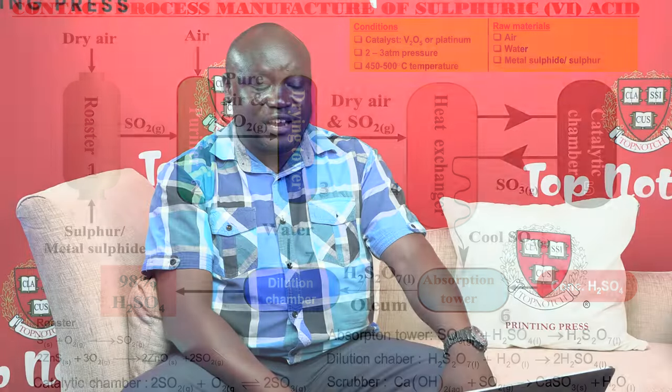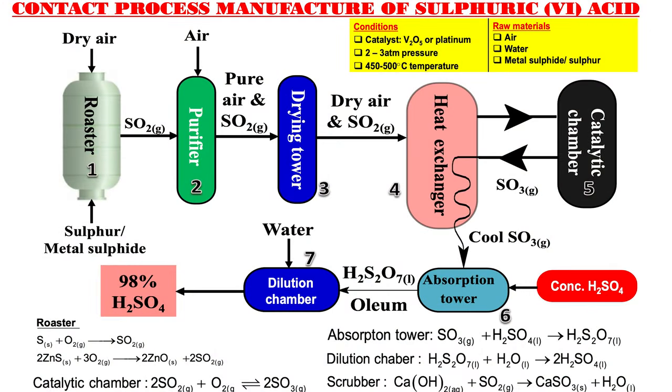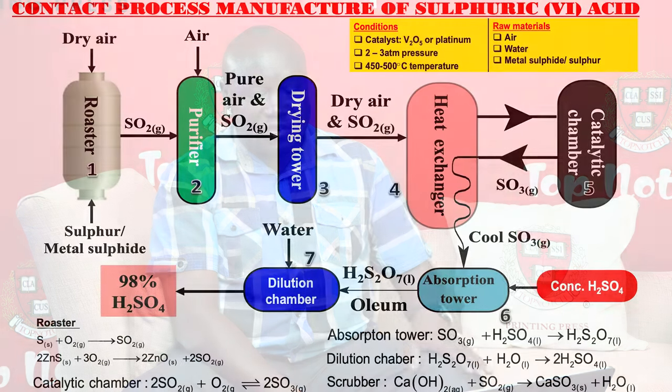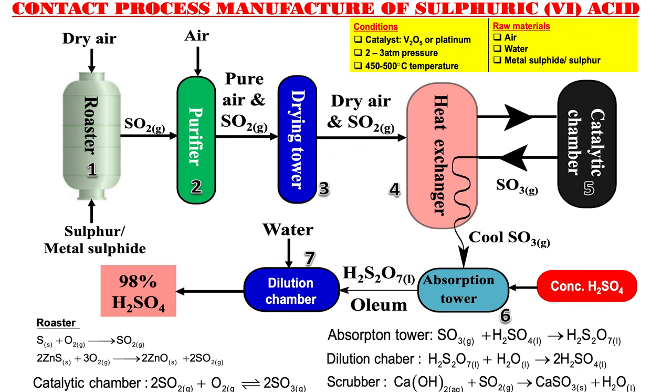We go to the absorption tower where SO3 is absorbed in concentrated sulfuric acid to form oleum. There is a reason why we don't absorb SO3 directly in water: SO3 dissolves in water with the evolution of a lot of heat, which may vaporize the acid to form fumes that are very difficult to dissolve. When SO3 dissolves in concentrated sulfuric acid, the reaction produces a lesser amount of heat. The oleum formed is H2S2O7, and then in the dilution chamber, the oleum is carefully diluted with water to give sulfuric acid at 98% concentration. In our next lesson, we will continue with the contact process and look at some of the effects this process may have on the environment.